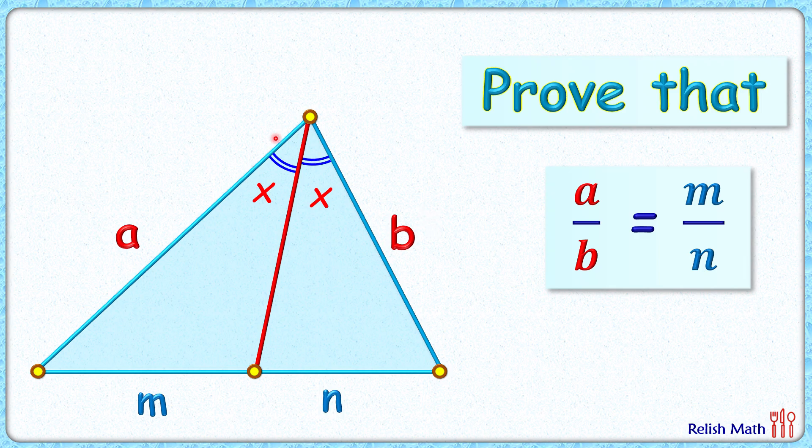So here this particular angle which is getting bisected is contained by sides A and B, and the ratio of this side A to B will be the same as the ratio in which the opposite side is getting divided, that is M is to N.